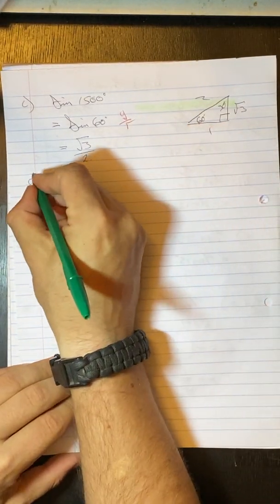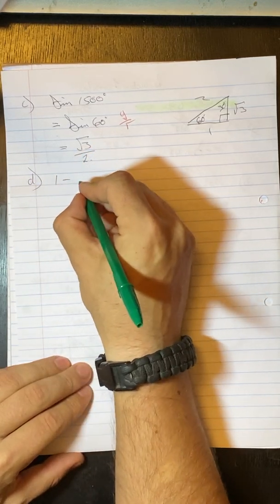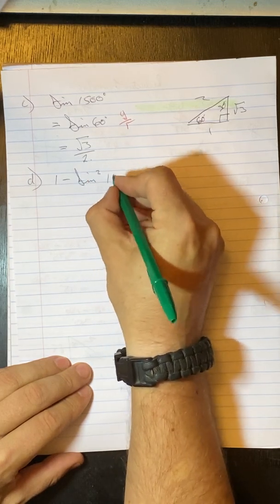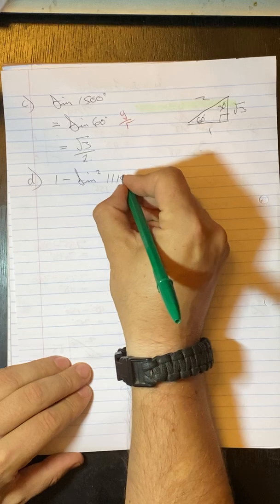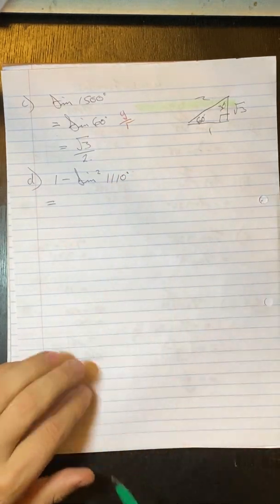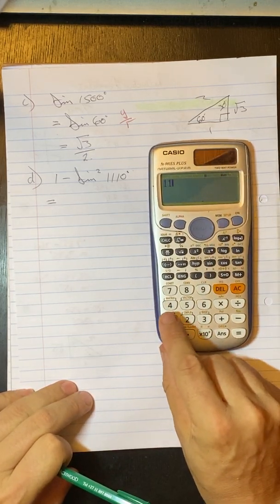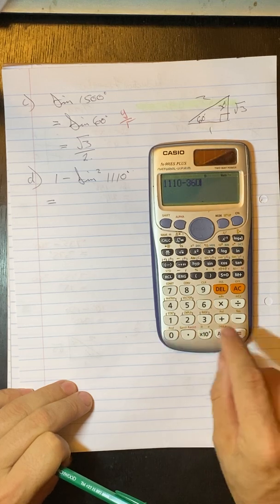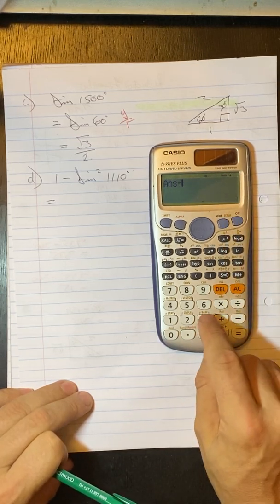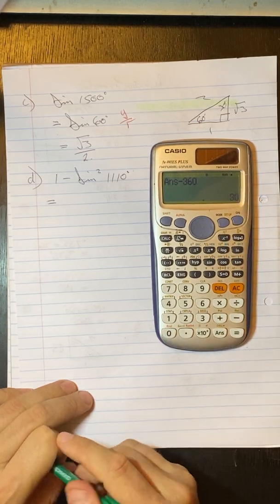Right. Question D. Without the use of a calculator, we need to simplify this minus sine squared, 1010 degrees. So we've got an angle bigger than 360. So I just take that 1,110, subtract a 360, subtract another 360, because that's still bigger than 360. One more time, and we get 30.